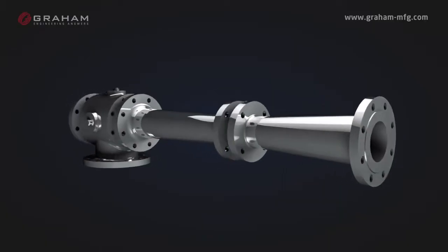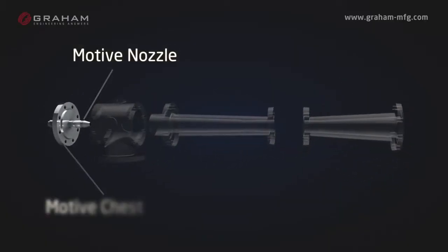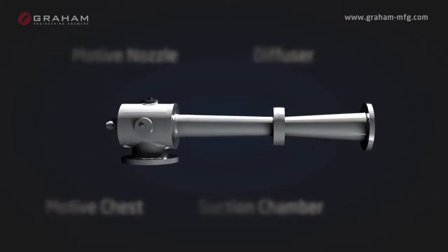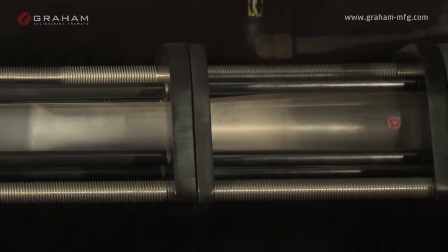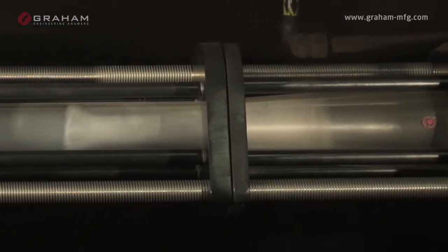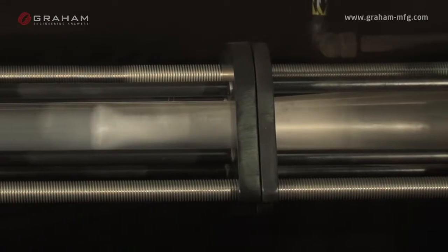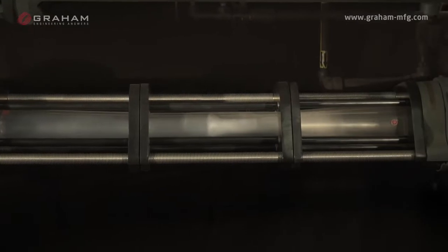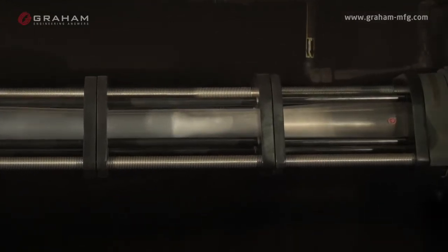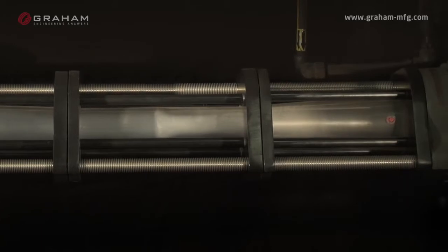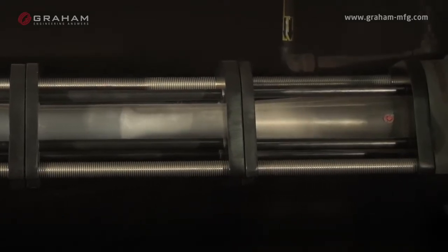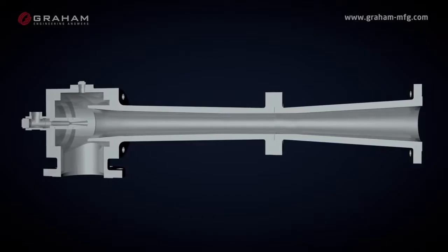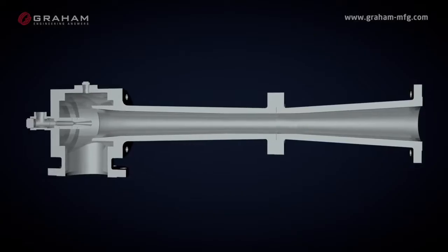There are four major components to an ejector: the motive nozzle, motive chest, suction chamber, and diffuser. An ejector works by converting the pressure energy of the motive fluid, otherwise known as potential energy, to velocity energy or kinetic energy. This is accomplished by the adiabatic expansion from the motive fluid supply pressure to the suction load pressure, as motive fluid flows through a converging-diverging nozzle, as you can see happening here in the glass ejector.